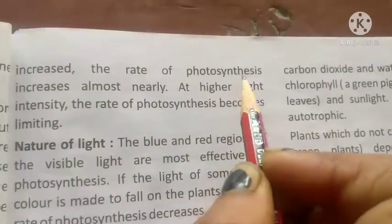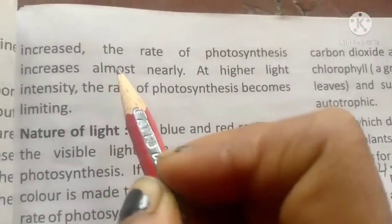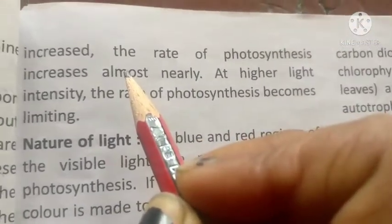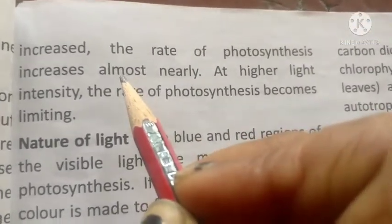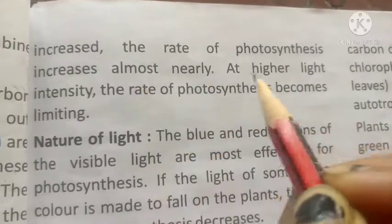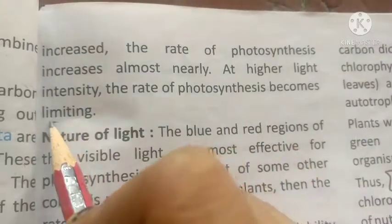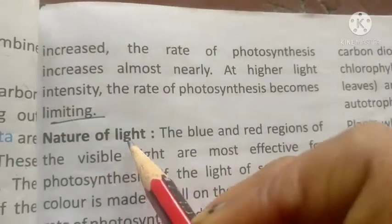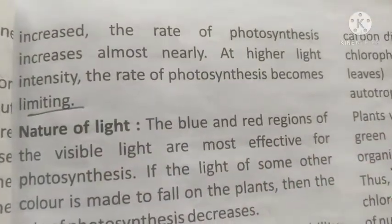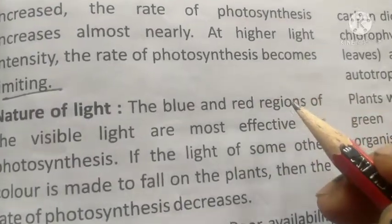Factors affecting photosynthesis. First, light intensity: as the light intensity increases, the rate of photosynthesis increases. However, at very high light intensity, the rate of photosynthesis becomes limiting and may decrease.